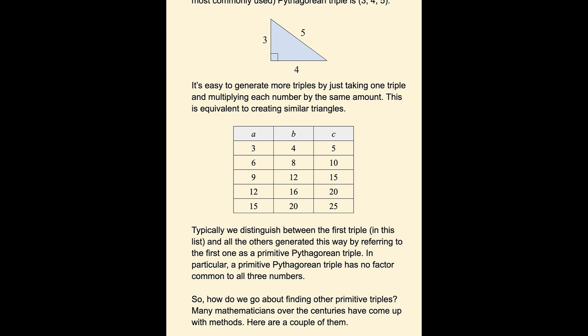Typically we distinguish between the first one in that list, 3, 4, 5, and all the others generated this way by referring to the first one as a primitive Pythagorean triple. In particular, a primitive Pythagorean triple has no factor common to all three numbers.